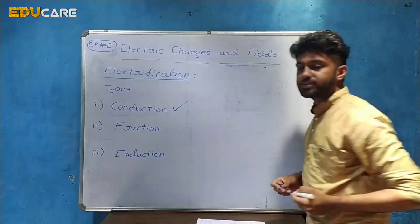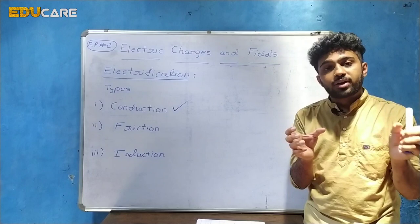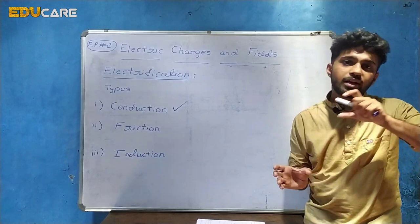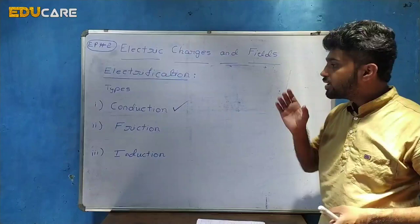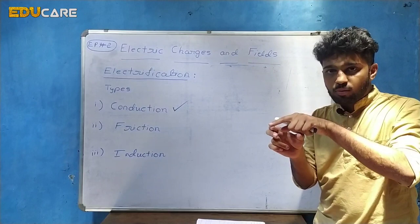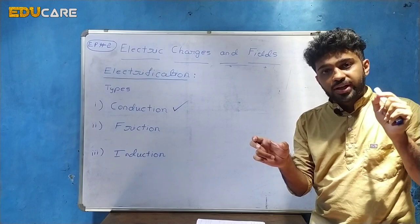Conduction means there is a direct contact, or a physical contact, between an uncharged body or a neutral body with a charged body. The charged body may be positively charged or negatively charged. Whenever there is a direct contact between the uncharged or neutral body with the charged body, charges from the charged body get transferred to the neutral body. This process is called conduction.